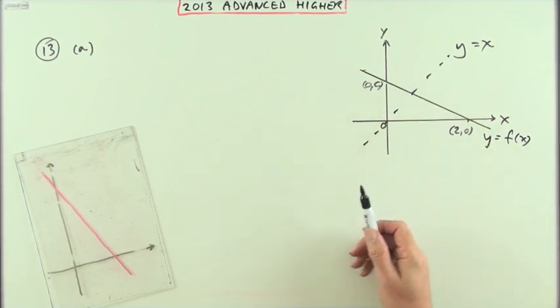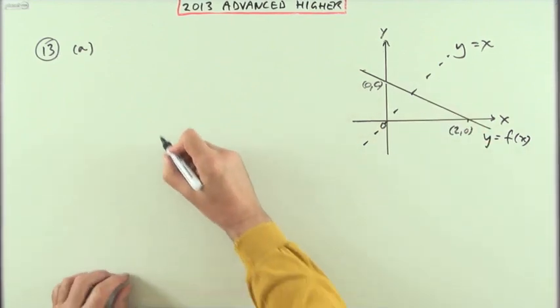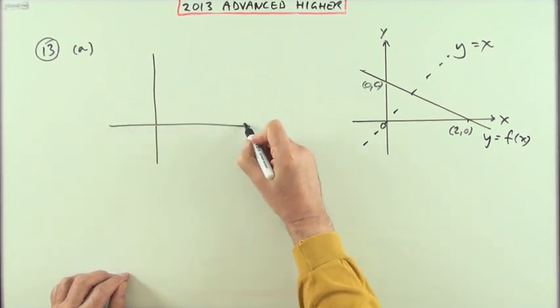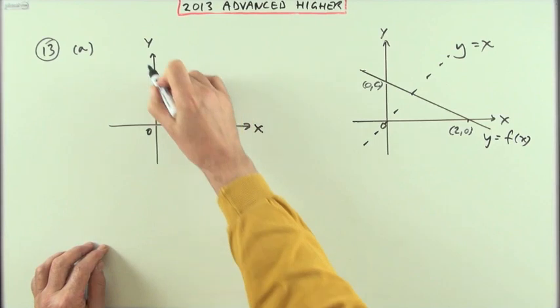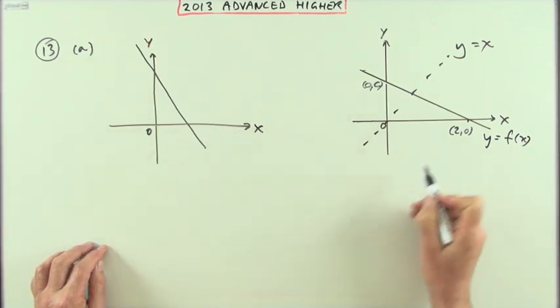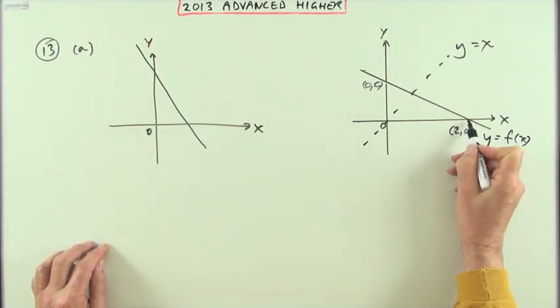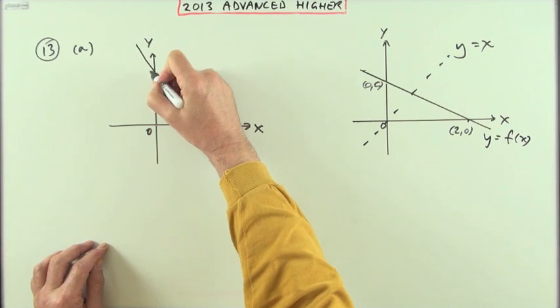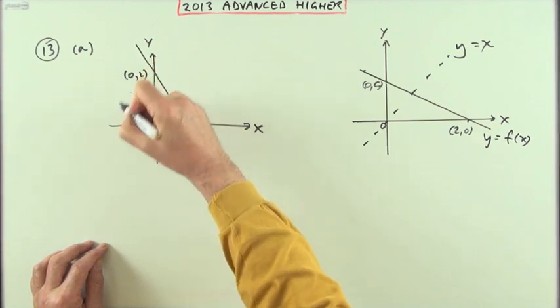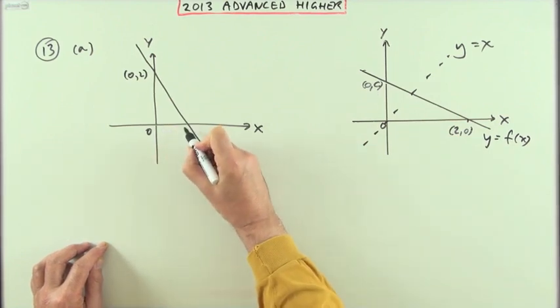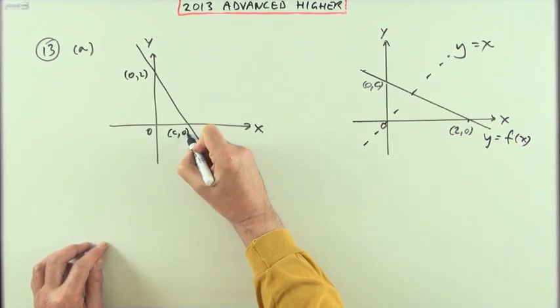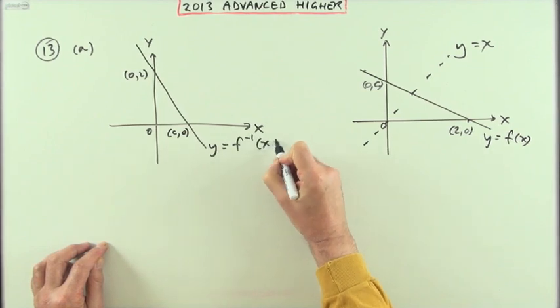So for the inverse, for the first part, for two marks, I'll draw my axes. The inverse means I would interchange my axes, so if it cut at 2 on the x-axis it'll now cut at 2 on the y-axis - of course that'll have to be (0,2). If it cut at c on the y-axis, it's now going to have to cut at c on the x-axis - of course that'll now be (c,0). There's the graph of the inverse.